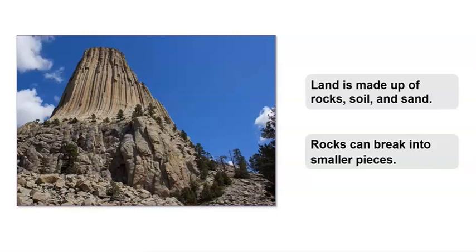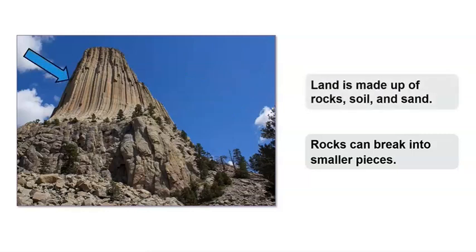Let's go back to Devil's Tower. Do you think the new information we learned can help us understand how Devil's Tower formed? We can see that this landform is made of rock. We can also see smaller pieces of rock broke off the tower. Even big rocks such as this tower can change.